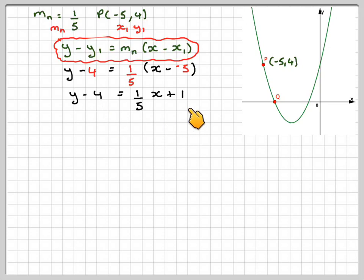If we now add 4 to this side, we get that the equation of the normal will be y equals 1 fifth x plus 5. We should relate back to the graph and see if that's an unreasonable answer, which it appears to be.